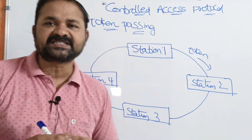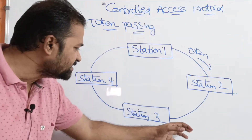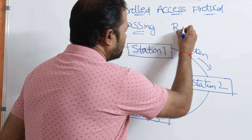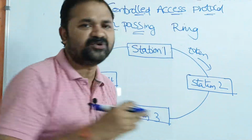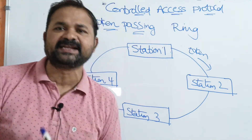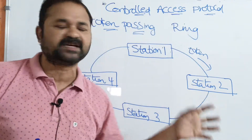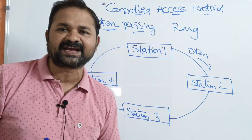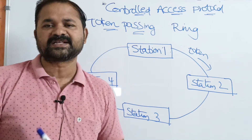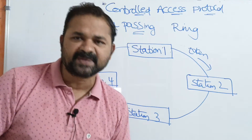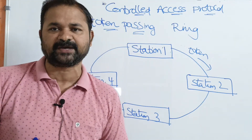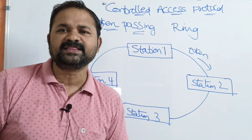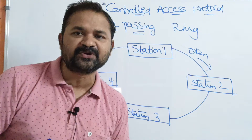In token passing, the stations will be arranged in a ring fashion like this. We can use any one of the topologies — it is our choice. Here, for explaining this concept, I am taking the help of a token ring. We can also take a token bus or star topology or mesh topology. Here we have four stations, which we can also call devices or computers.